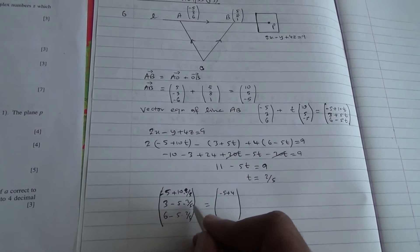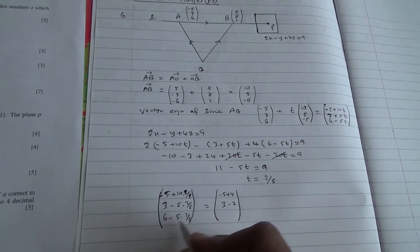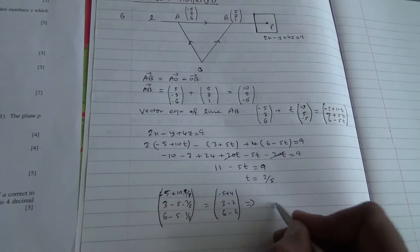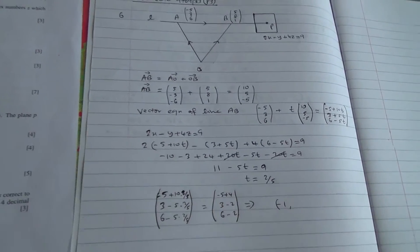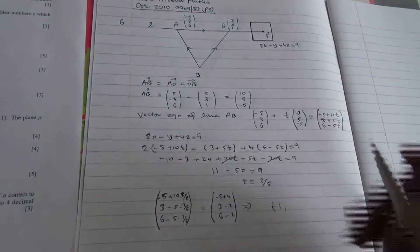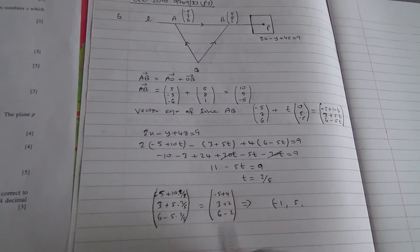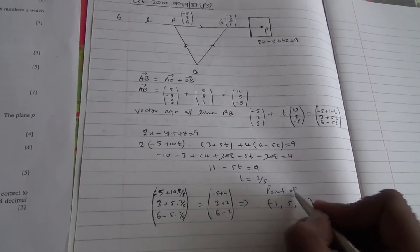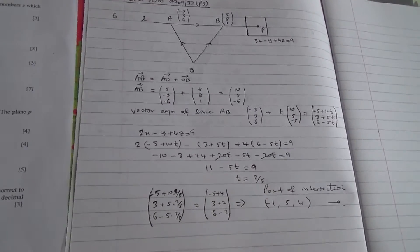Okay, so 2/5 times 10 is 4, and then we've got -5 + 4. And here, 5 goes into 5 is 1, times 2, 3 + 2. We've got 6 - 2, and that's going to give us -5 + 4 is -1, 3 + 2 is 5, 6 - 2 is 4, and here is the point of intersection.